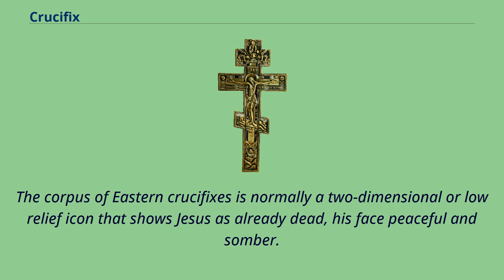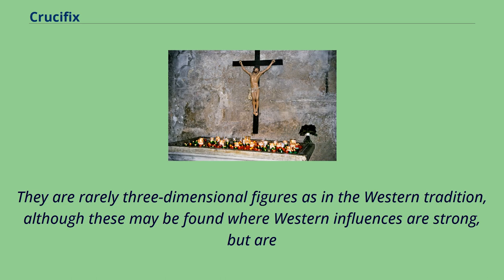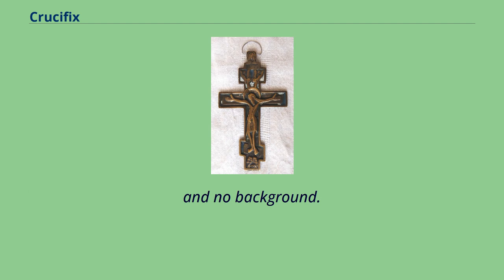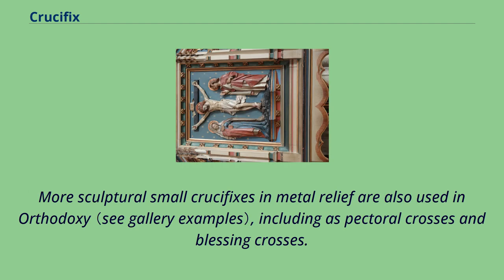The corpus of Eastern crucifixes is normally a two-dimensional or low-relief icon that shows Jesus as already dead, his face peaceful and somber. They are rarely three-dimensional figures as in the Western tradition, although these may be found where Western influences are strong, but are more typically icons painted on a piece of wood shaped to include the double-barred cross and perhaps the edge of Christ's hips and halo, with no background. More sculptural small crucifixes in metal relief are also used in Orthodoxy, including as pectoral crosses and blessing crosses.